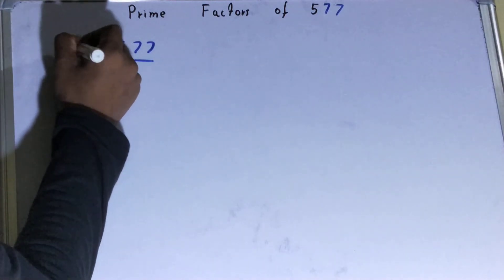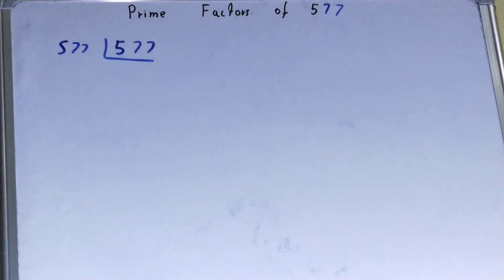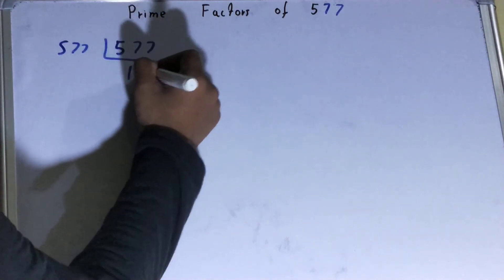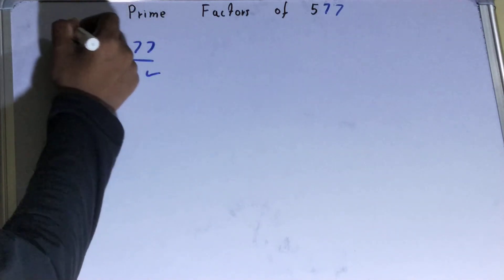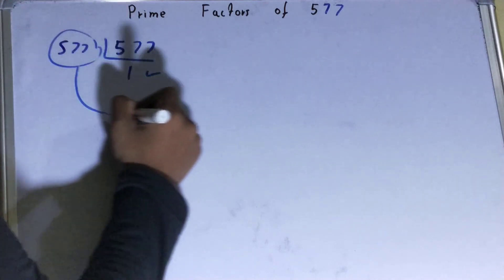When you do that, you'll be left with one. Once you're left with one, the work is done, and whatever you have on the left-hand side will be the prime factor of the number 577.